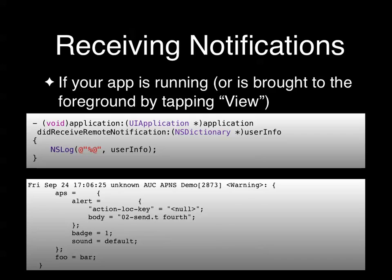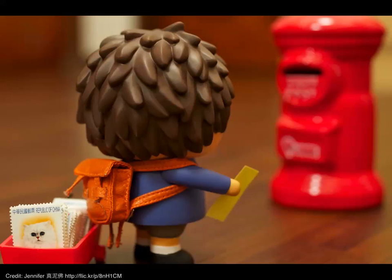If you choose to configure the app so it doesn't run in the background, you don't have to worry about that. Also, in many cases all you're doing is using this as a hint to go check for new data on the network. There's one other slight complexity: if you've configured the alert so you only get the OK button and not view, your app running in the background will never receive the applicationDidReceiveRemoteNotification message if they tap OK or cancel. That's everything about receiving messages — there's no more APIs or extra detail.